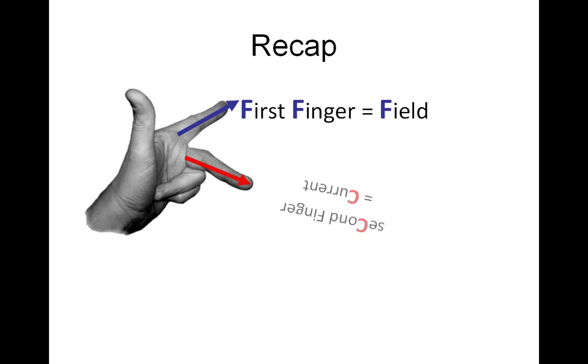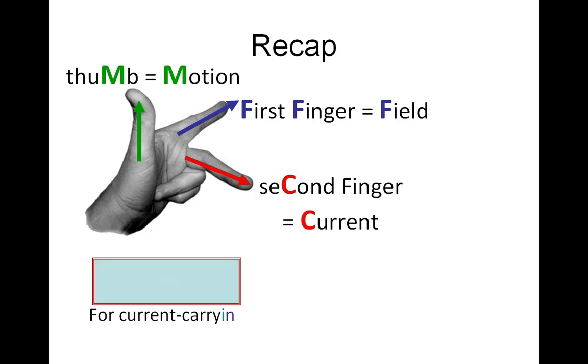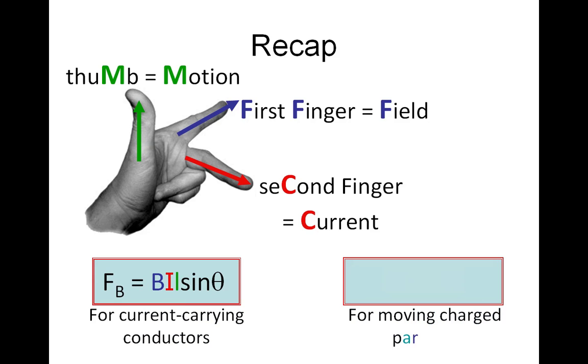Just to recap, there are three important things from this session: Fleming's left hand rule, the force on current-carrying conductors, and the force on moving charged particles.